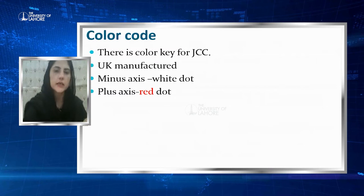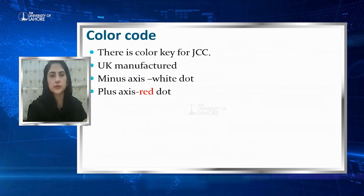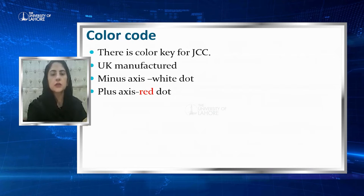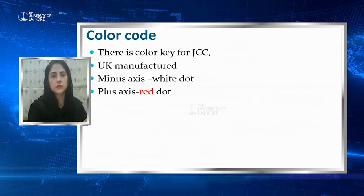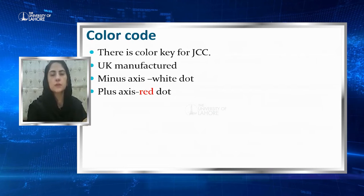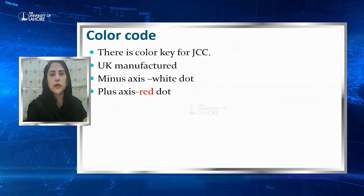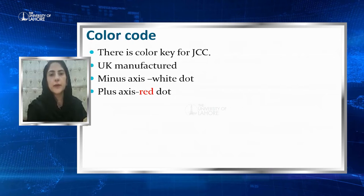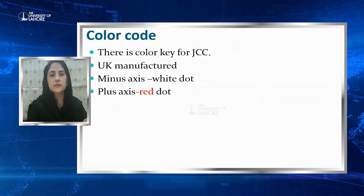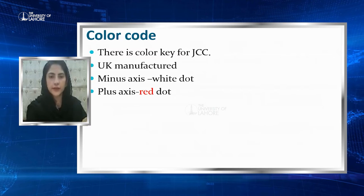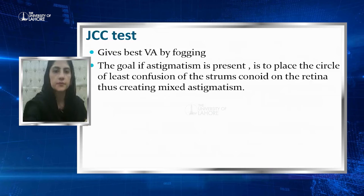That covers the construction of the Cross Cylinder. It also comes with color codes: if UK-manufactured, the minus axis will have white dots and the plus axis will have red dots.